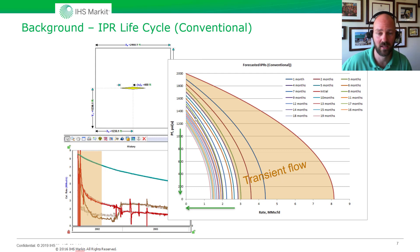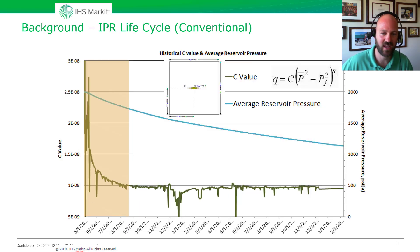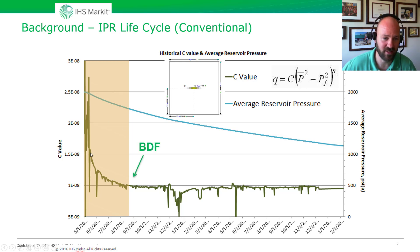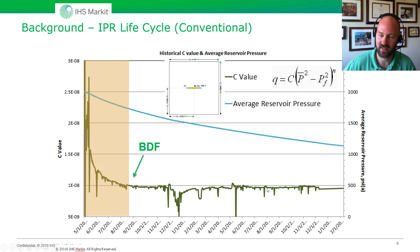These methods work really well in boundary-dominated flow. If we take the same high-permeability well but look at its productivity throughout its entire life, in transient flow — which can be very short-lived — the productivity is changing. But after we reach the boundary in the reservoir, the well's productivity is very stable, and this is where the traditional IPR method works awesome.